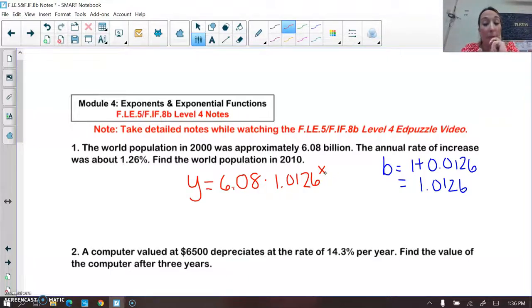Now it says to find the world population in 2010. Now the world population in 2000 was 6.08 billion. So in 2010, that would be 10 years later. So what that means is we are going to put 10 in for x.